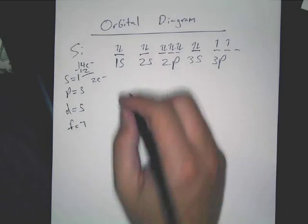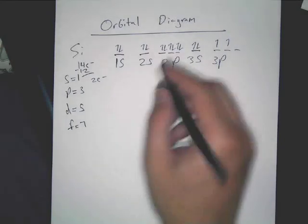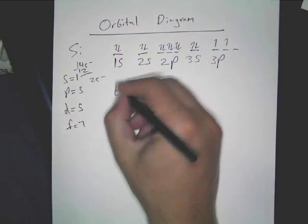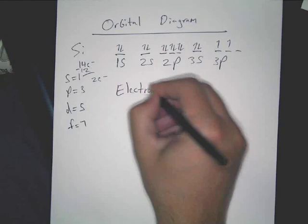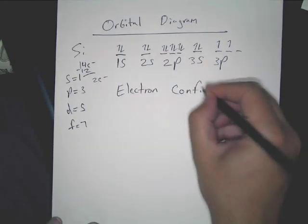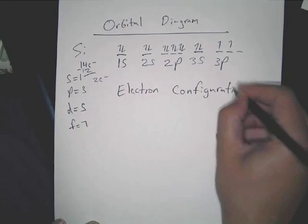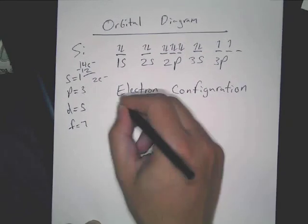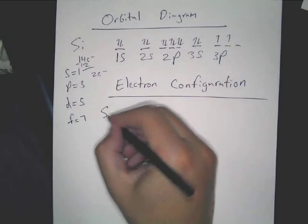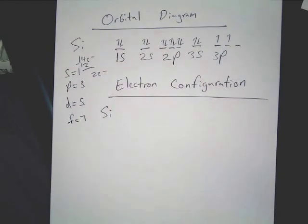Now we are going to do the electron configuration of the same thing. So: orbital diagram done, and now we're going to do the electron configuration of silicon. This is a lot easier and a lot faster.